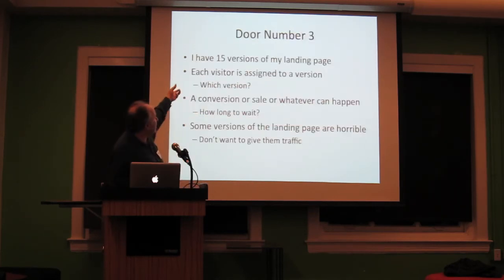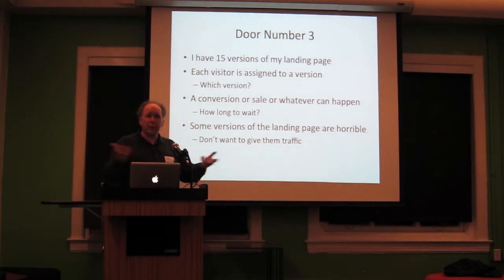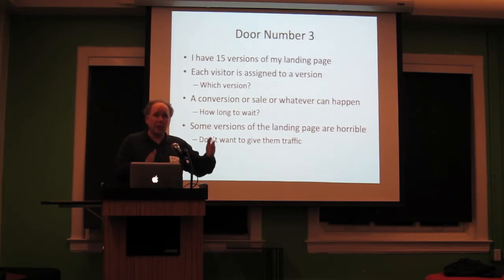As I said, I'm going to show a simplified version where we have, say, 15 versions of the landing page. Each visitor is assigned a version. The first question is which version. A conversion or sale happens or does not. How long do we wait? Some versions of the landing page are horrible. We want to not show them soon, hopefully, very soon. We don't want to wait for a total experimental period and then make a decision about everything, because we'll learn about some things faster than other things.